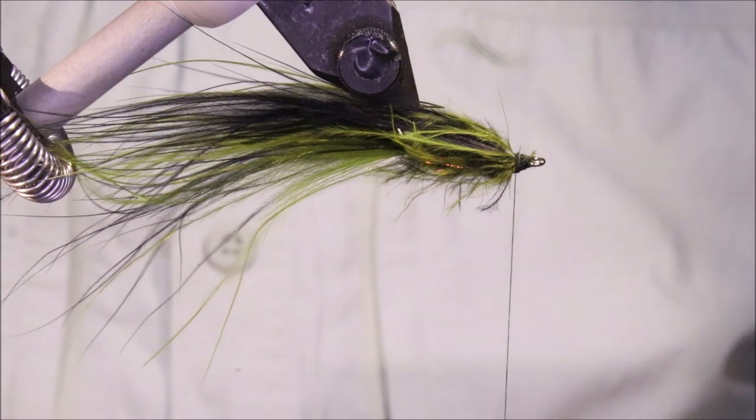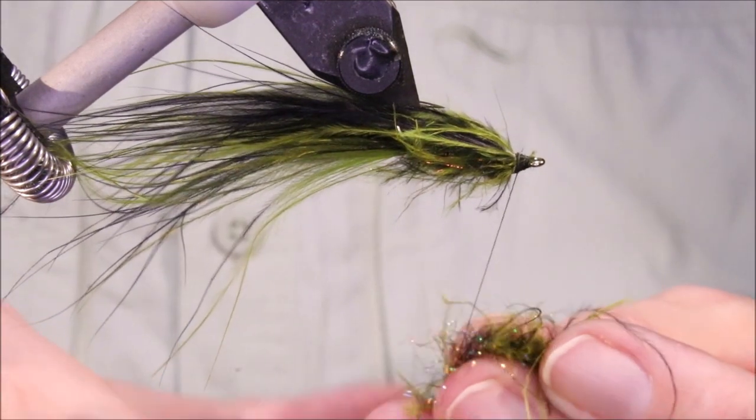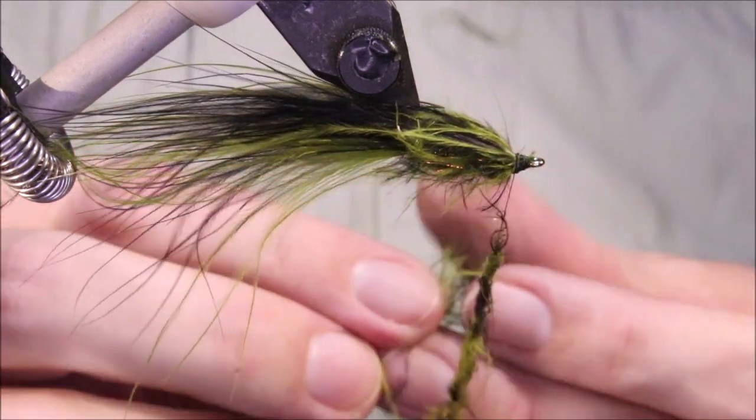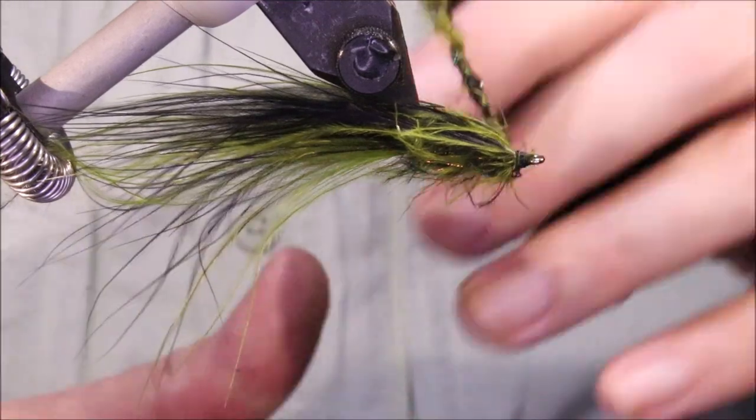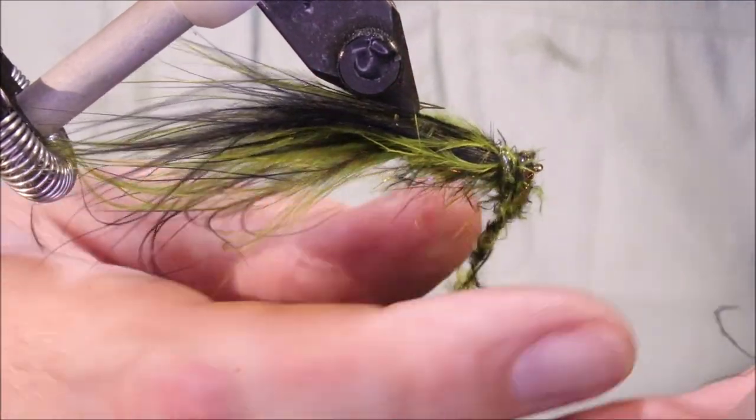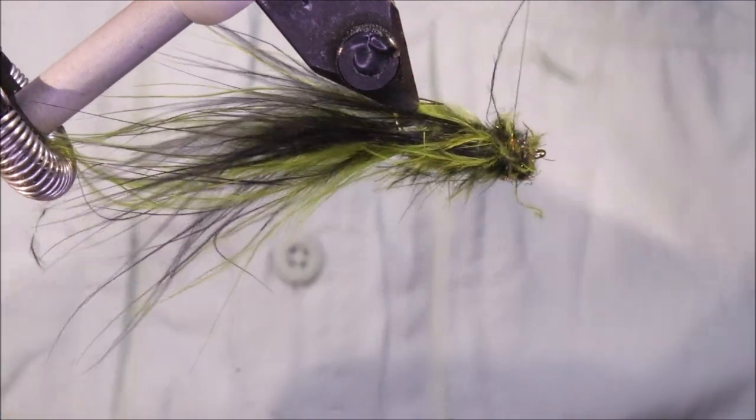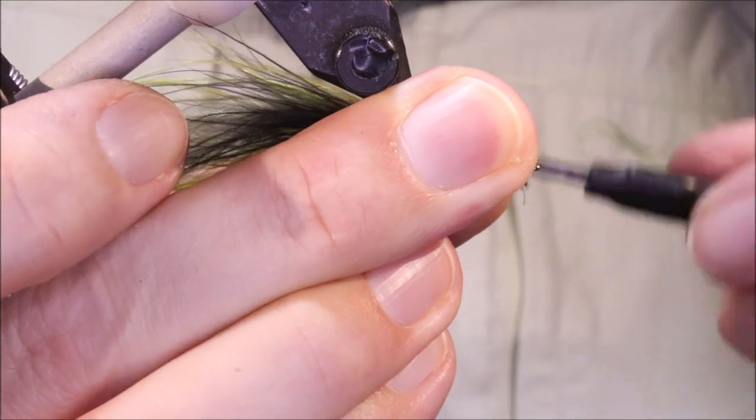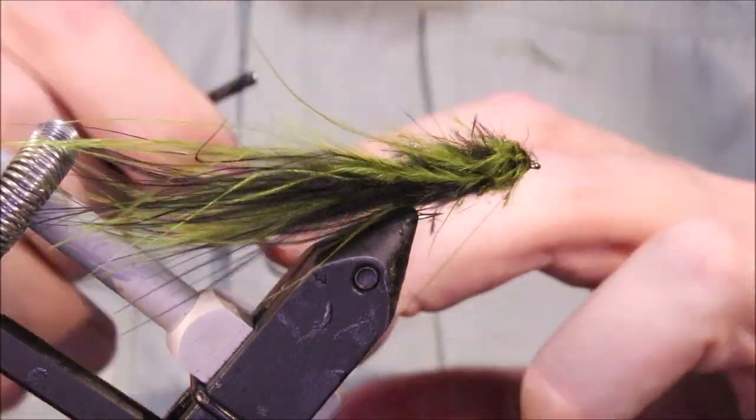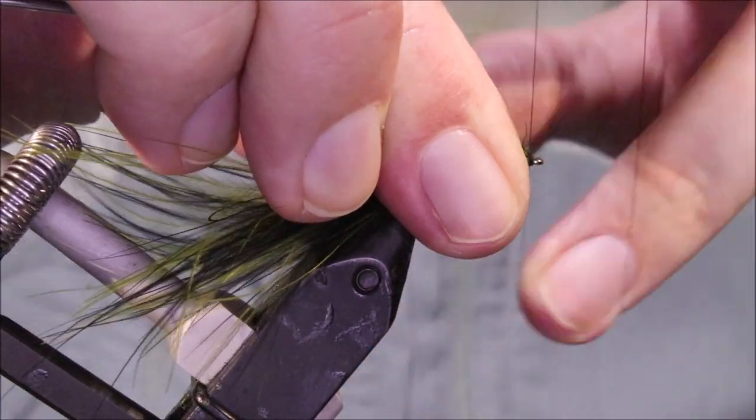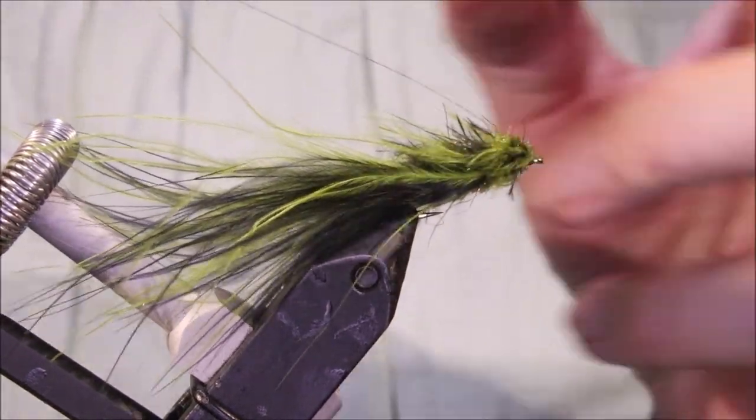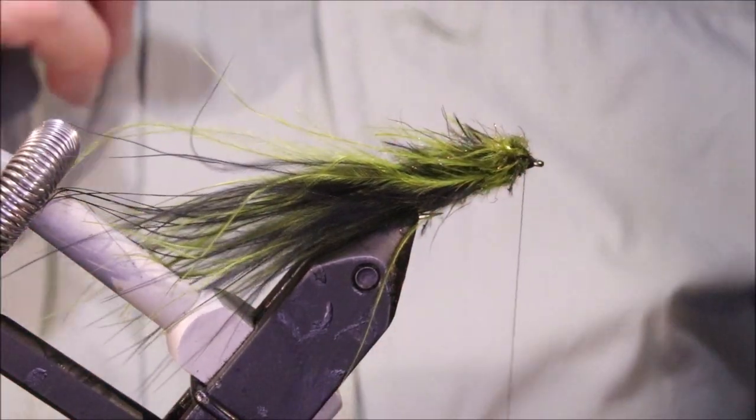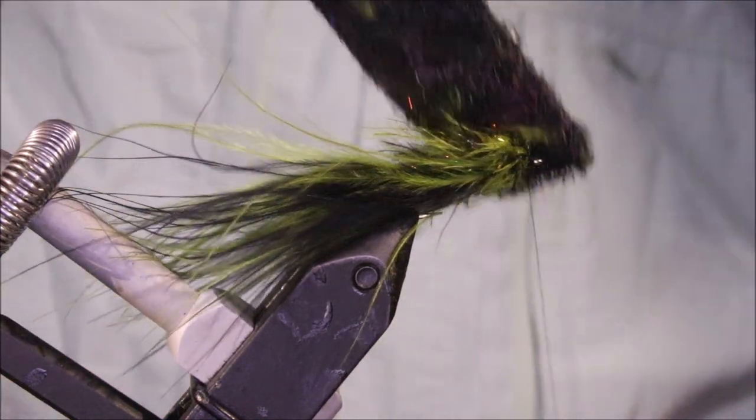And then just take the same dubbing, just that marabou and Spectra Flash. You could add a bit more Spectra Flash at the front if you want, because it really stands out when it's on the head. And then just run my thread through that there to tighten it, then come to the front. Anything that's going forward, just sweep it back. Whip finish.